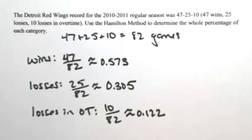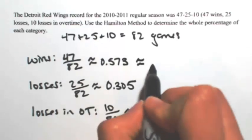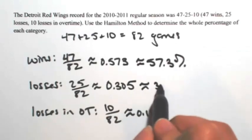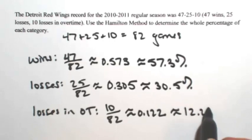Okay, so as percentages, just move the decimal two places to the right. So 57.3% for wins, 30.5% for losses, and 12.2% for losses in overtime.